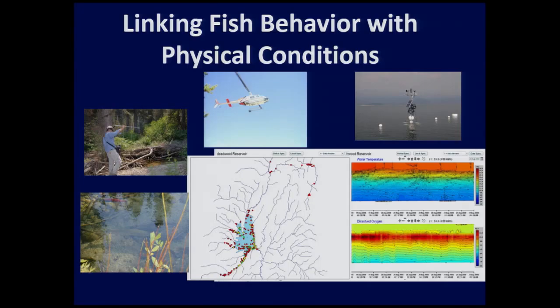Here is the linkage. We can see where each dot — representing a fish on a particular date — corresponds to the water temperature and dissolved oxygen at different spots in the rivers, identified using the lake diagnostic tools. Now that I've presented what we tried to do, I want to provide some interesting and sometimes unexpected results.